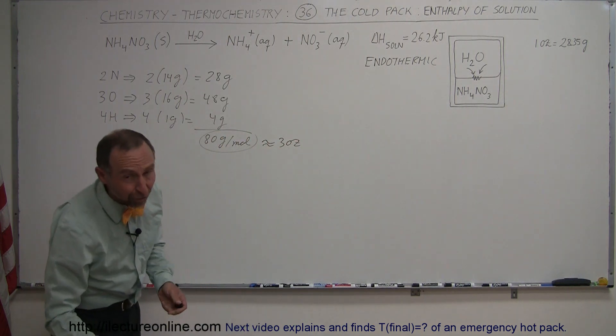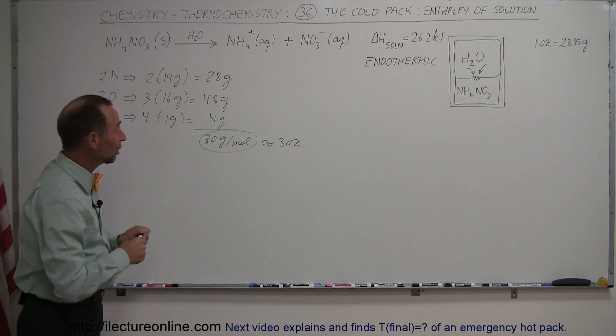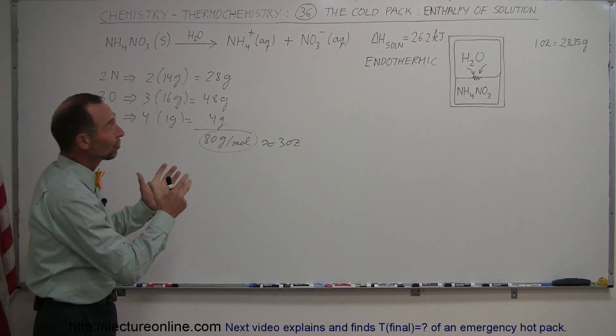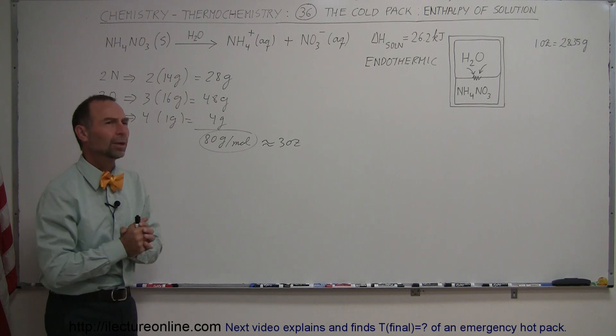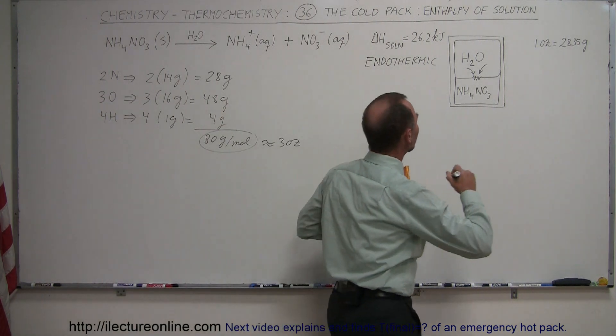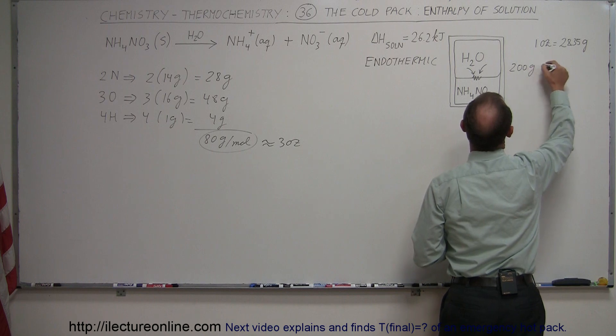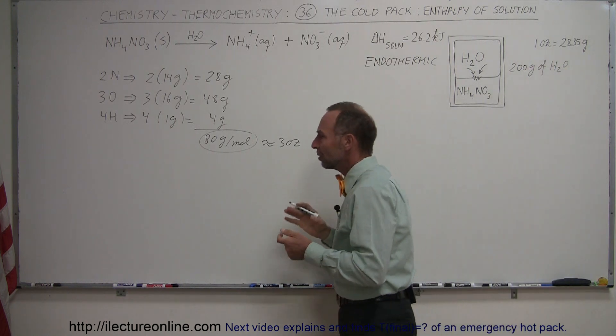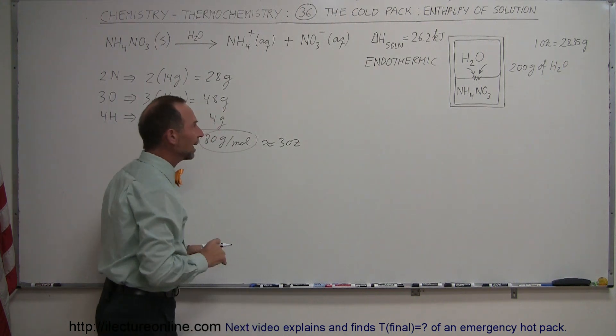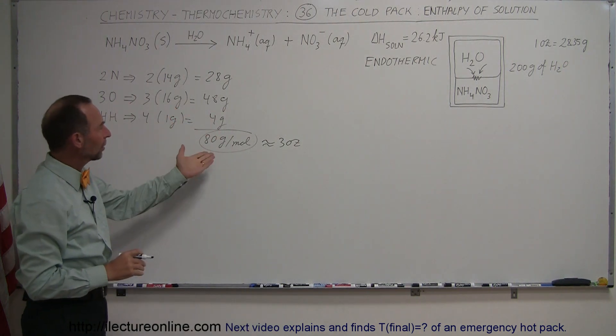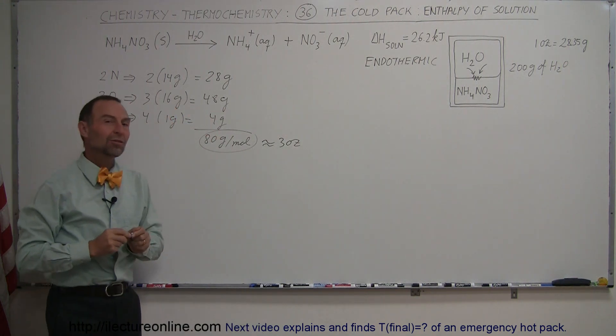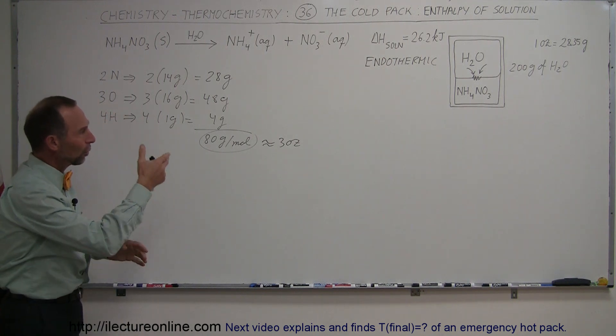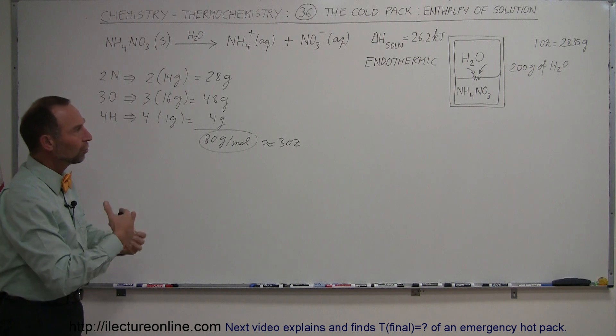All right, so depends how much they put in that pack. Let's assume they just put one mole, three ounces of ammonium nitrate in that pack. They put some water in there, how much water? Well let's say they put 200 grams of water, which is about eight ounces, a little bit less than eight ounces. So with the water and the ammonium nitrate, you have a pack that weighs maybe close to three quarters of a pound.